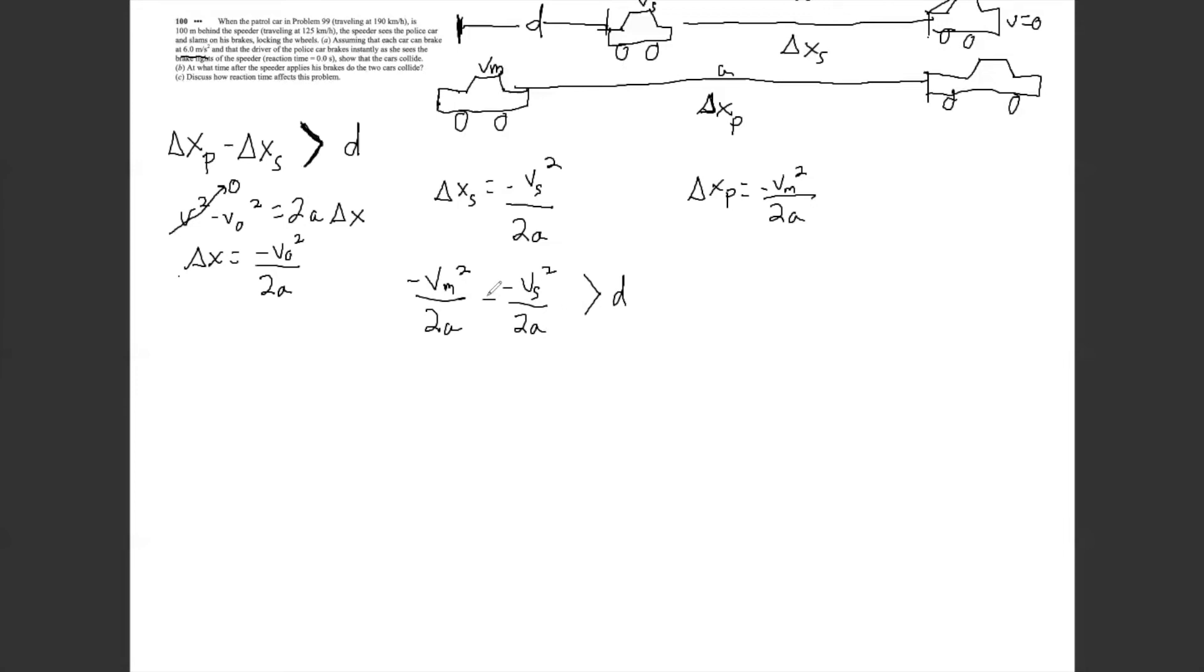Well, this is our question here. So let's just say negative vm squared over 2a minus minus vs squared over 2a, and we want, is that greater than d? And it's tempting to maybe want to make these positive, and actually you could do that. But remember that this a is going to be negative later on.